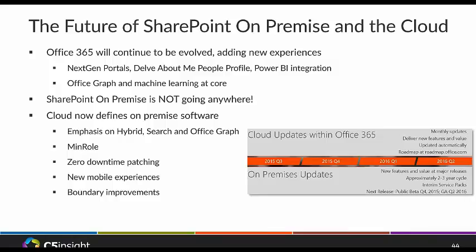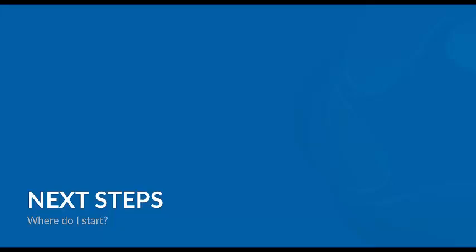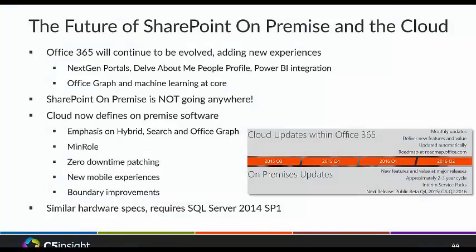Key features to look for in SharePoint 2016: a big emphasis on hybrid to improve the experience between on-premise and cloud; search and Office Graph integration; zero downtime patching to make patches simple and easy without taking the server down; and increased boundary limits — going beyond the 200 GB content database limit or the 5,000 list threshold. The hardware specs are similar to 2013, with the exception that it will require SQL Server 2014. It's quoted for release in Q2 of 2016.